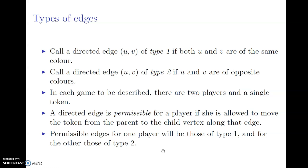In each game that I'm going to talk about — I'll focus on basically just one game but mention two others — there are two players and a single token. The players will take turns to move the token from one vertex to another along directed edges. One player is allowed to move the token along only type 1 edges, and the permissible edges for the other player are type 2 edges.